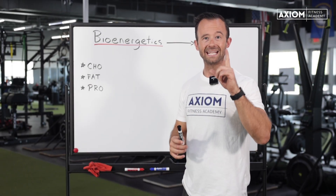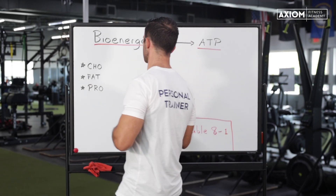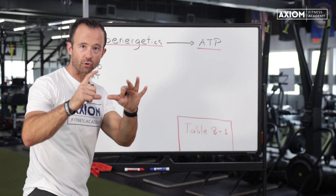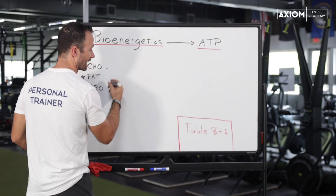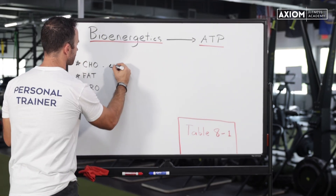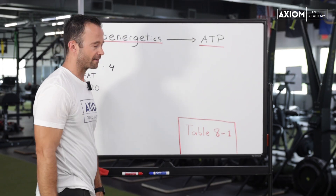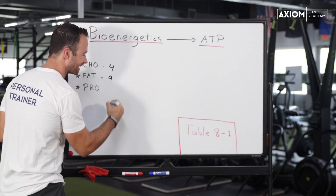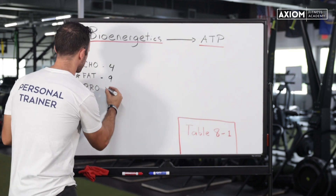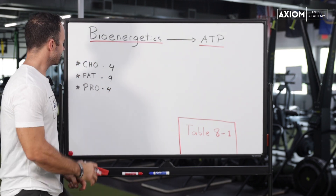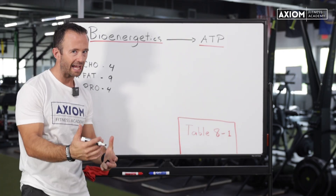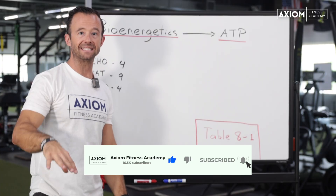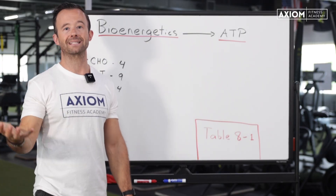The first macronutrient is carbohydrates — I call it CHO. What you need to know is the calories per gram, essentially the energy density — how much energy do we get from a gram of this thing. We get four kilocalories per gram of carbohydrate. We get nine kilocalories from fat, and we also get four from protein. This is a really important concept, not just for counting calories and nutrition, but especially for bioenergetics — this is energy density.